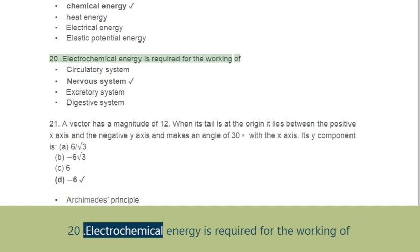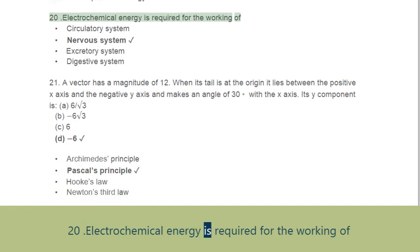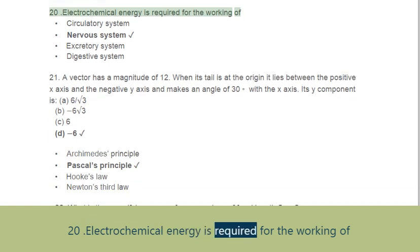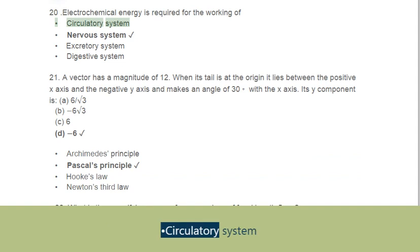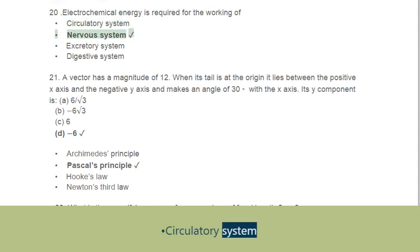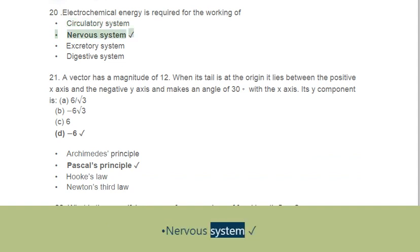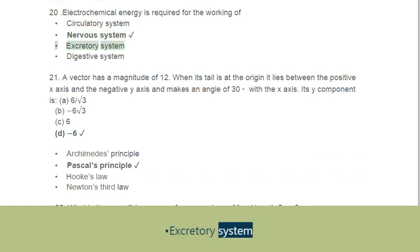Question 20: Electrochemical energy is required for the working of. Options: A. Circulatory system, B. Nervous system, C. Excretory system, D. Digestive system.